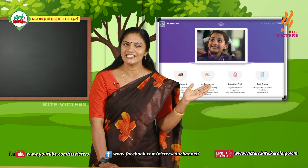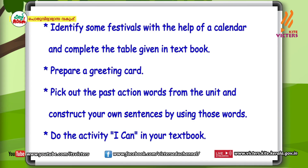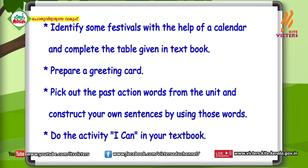Review of today's works: identify some festivals with the help of a calendar and complete the table given in the textbook. Prepare a greeting card. Pick out the past action words from the unit and construct your own sentences using those words. Do the activity 'I can' in your textbook.